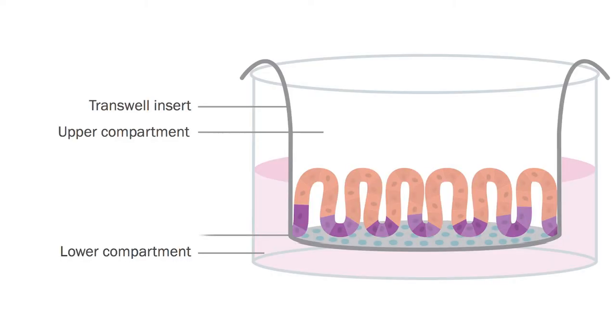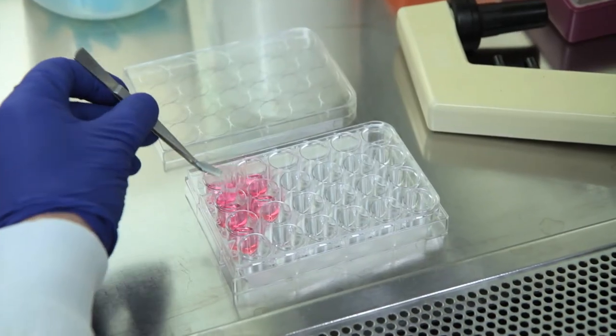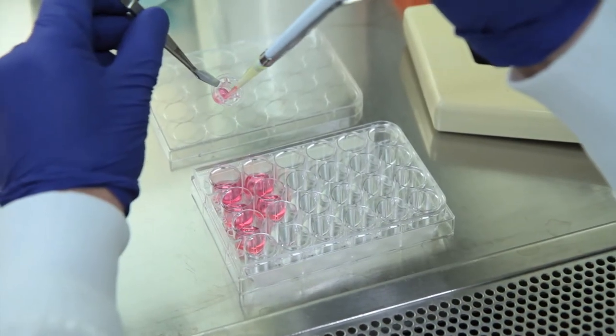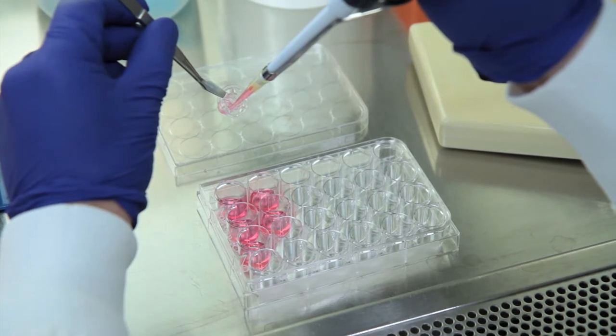Differentiation of Mimics adult stem cells is performed in an air-liquid interface using transwell inserts. Prior to plating the stem cells, transwell inserts should be prepared with a coating of Coltrex basement membrane extract, followed by a monolayer of Mimics irradiated fibroblasts. This combination provides important structural support for the three-dimensional differentiation of adult stem cells. For robust differentiation, the irradiated fibroblasts should be in a healthy and confluent monolayer, such as the example displayed on the screen.